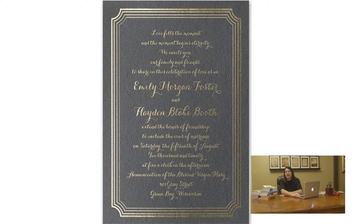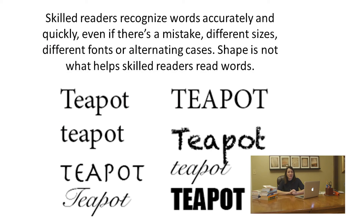If we're reading words according to shapes, you should have difficulty reading different scripts like cursive handwriting or fancy fonts on an invitation. But again, you don't have difficulty. Shape is not something we pay any attention to as skilled readers. It's not a viable explanation for how we read words.